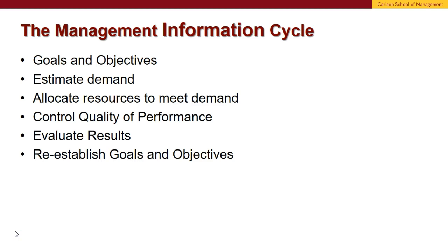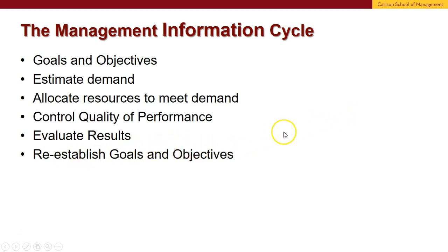In this lecture, we're going to talk about the Management Information Cycle and go through its different areas: the goals and objectives, estimation demand, allocate resources to meet demand, control quality and performance, value of results, and reestablish goals and objectives. If you notice, it goes back to the beginning, so it's almost like a circle of how this normally goes.